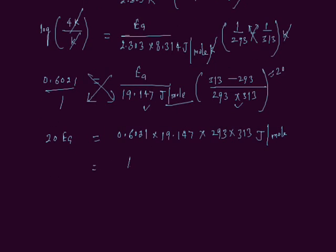You can multiply all these numbers. You will get 1057267 joules per mole. And here we have 20 Ea.